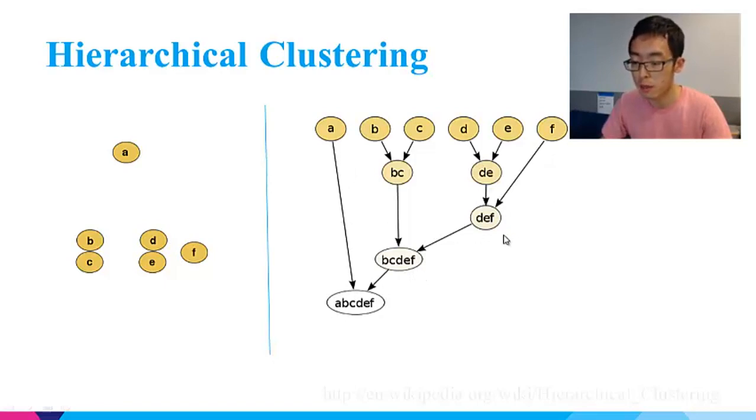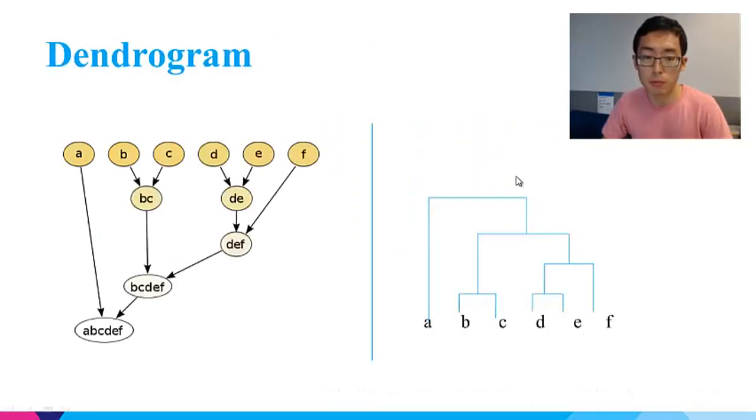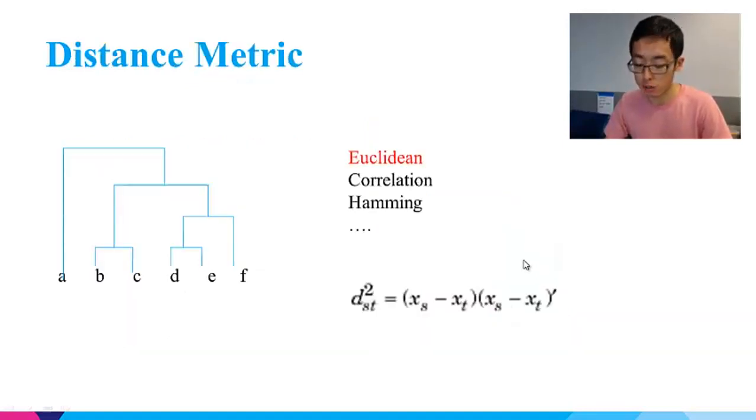If we set cutoff here, we've got three clusters: cluster A, cluster BC, and cluster DEF. If we set the cutoff to the lowest level, we will have our original six data points. The dendrogram we saw in the clustergram is just a compact representation of this hierarchical tree-like structure after turning it upside down. Above is the main idea of hierarchical clustering.